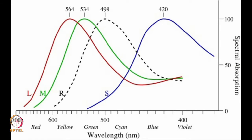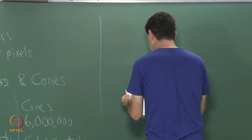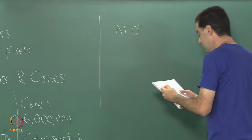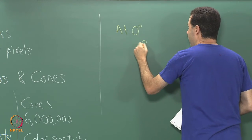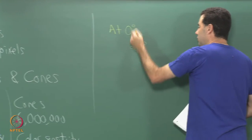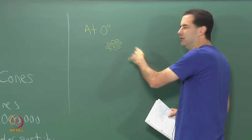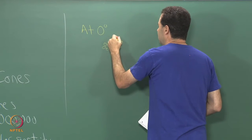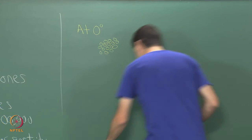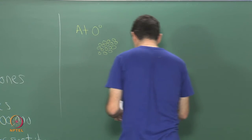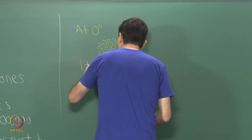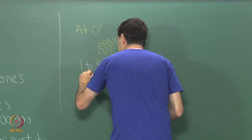In the fovea at 0 degrees, it is all cones and they are very densely packed. I am not drawing them as different colors, but there is also some kind of irregular arrangement of colors. These are quite small; their diameter is between 1 to 4 micrometers in diameter.